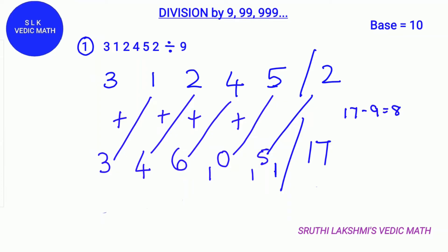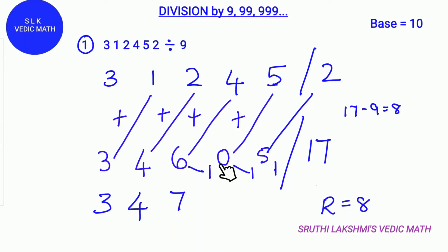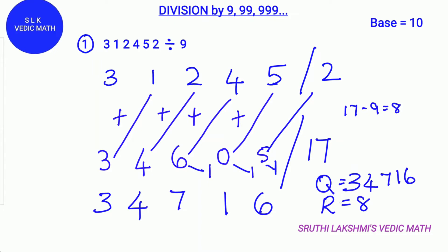So we carry 1 to the quotient. Then we do 17 minus the divisor 9. 17 minus 9 is 8. So the remainder is 8. For the quotient we write down 3 as it is, 4, and then we add 6 plus the carry 1 which makes 7. Then we do 0 plus the carry 1 which makes 1. After that we do 5 plus 1 which makes 6. So the quotient is 3, 4, 7, 1, 6 and the remainder is 8.